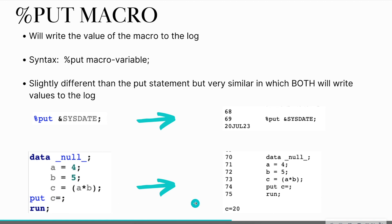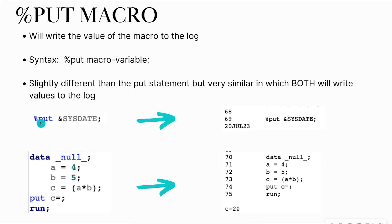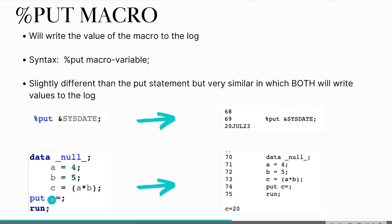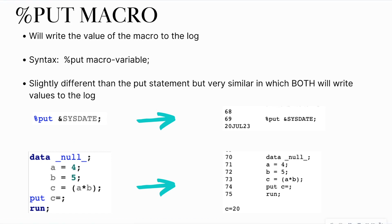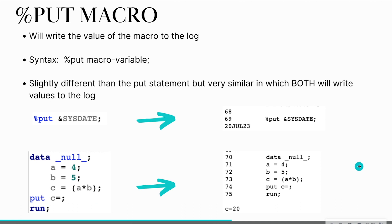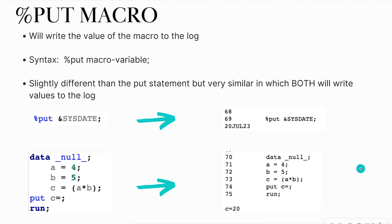The put statement is still writing a value to the log, as is the percent put macro. The difference is that the percent put macro lets you write values of global macros that are already built in, while the put statement lets you write values from a data step or a proc step. This is a pretty useful function when you want to test out your code and just have things write to the log.